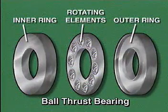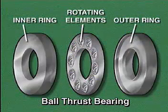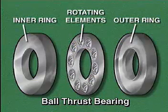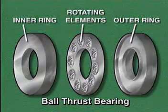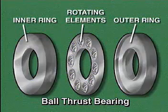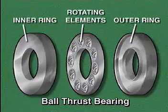This illustration shows the main parts of a type of ball bearing called a ball thrust bearing. In a ball thrust bearing, the inner and outer rings are parallel to each other instead of one inside the other. This placement of the rings allows the bearing to support axial load, but only a small amount of radial load.